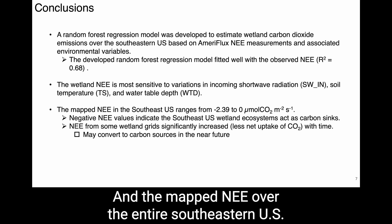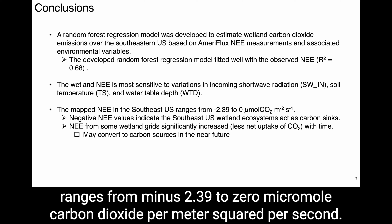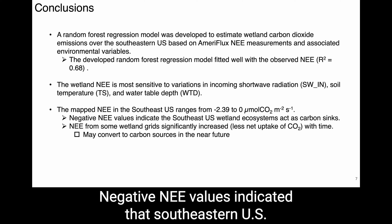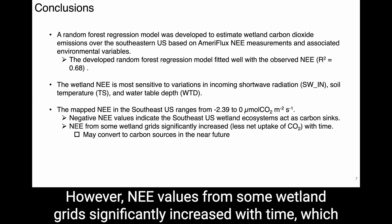The mapped NEE over the entire southeastern U.S. ranges from minus 2.39 to 0 micromol CO₂ per m² per second. Negative NEE values indicate that southeastern U.S. wetland ecosystems act as carbon sinks. However, NEE from some wetland grids significantly increased with time, which requires our actions to reverse this trend.